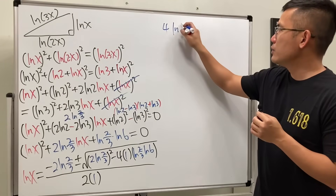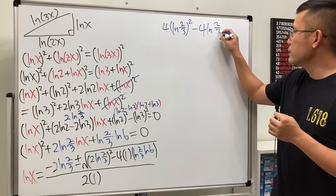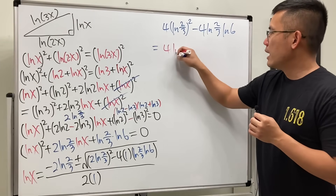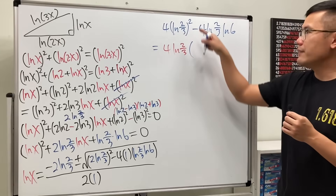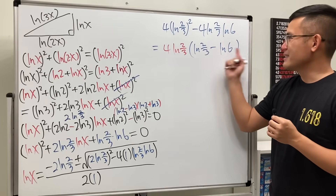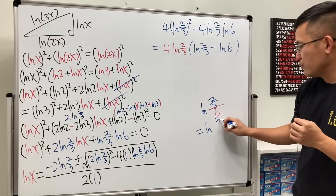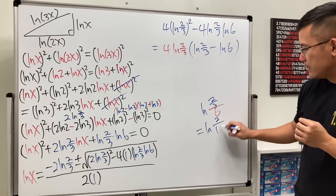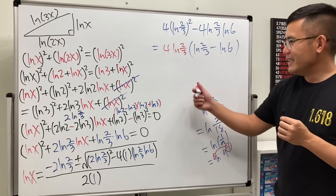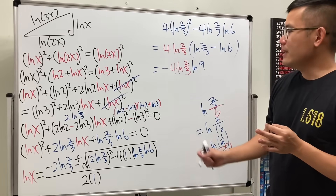Squaring the first part gives 4·ln²(2/3), and the second part is 4·ln(2/3)·ln(6). Both terms have a factor of 4·ln(2/3), so we factor that out: 4·ln(2/3)·[ln(2/3) − ln(6)]. Now ln(2/3) − ln(6) = ln((2/3)/6) = ln(2/18) = ln(1/9) = ln(9^(−1)) = −ln(9). So the discriminant becomes 4·ln(2/3)·(−ln(9)).